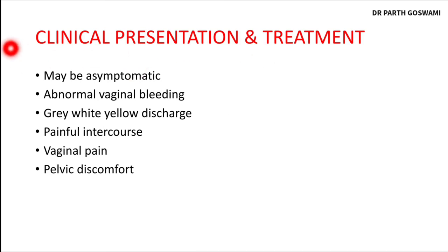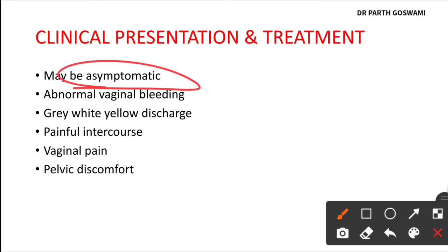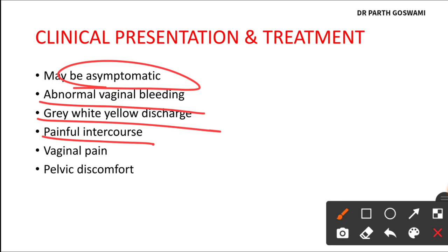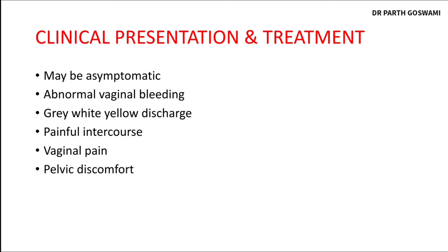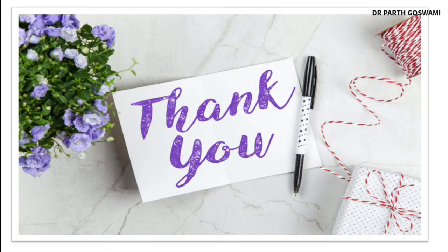Regarding clinical presentation: most women are asymptomatic, and it can be an incidental finding on biopsy taken for another reason. If symptomatic, the woman may experience abnormal vaginal bleeding, gray, white, or yellow discharge, and if a sexually transmitted illness like gonorrhea or chlamydia is associated, intercourse may be very painful. Some women may also experience vaginal pain and pelvic discomfort. Treatment involves antibiotics.